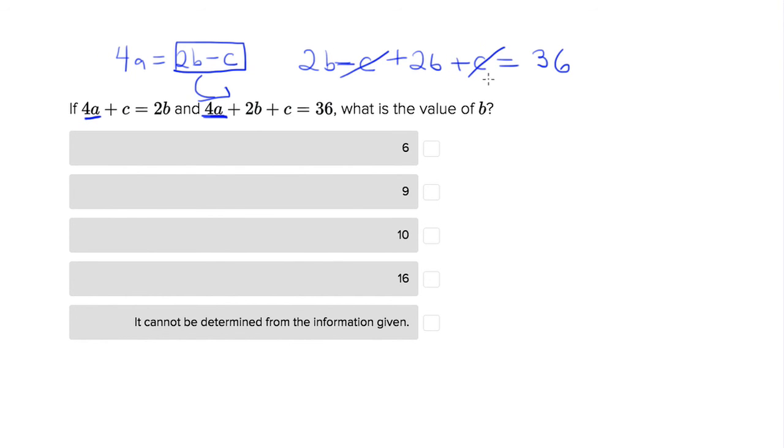So now we're just left with b's and we can really easily solve the problem. So we have 4b equals 36, divide both sides by 4, b equals 9. And it's right here.